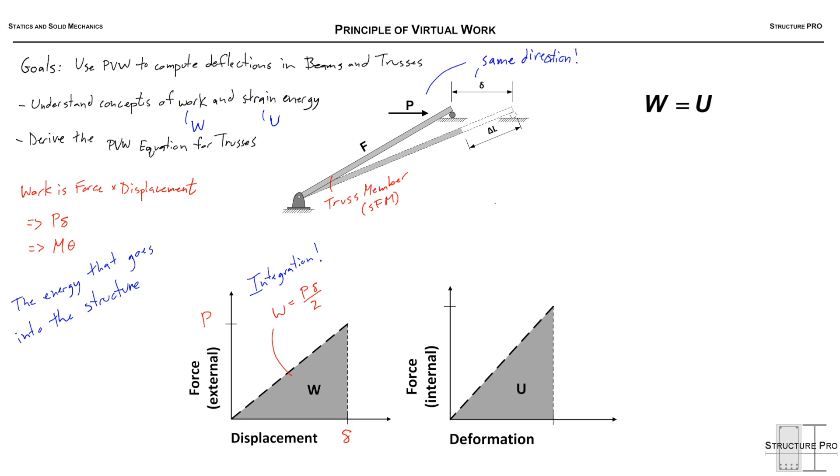Now work is a form of energy, and the energy or the work that's going into the structure is stored in the structure in the form of strain energy. So we can relate these two because they're equal. Whatever we put in is what is stored in there. So this is called the conservation of energy. This is one of the ways we can state that. So W equals U. Your external work done on the structure is equal to the internal strain energy stored in the structure.